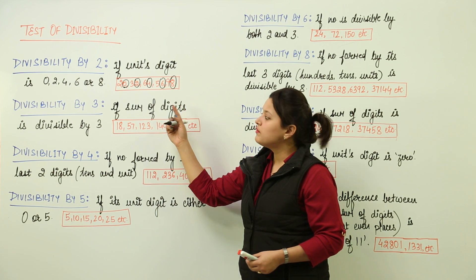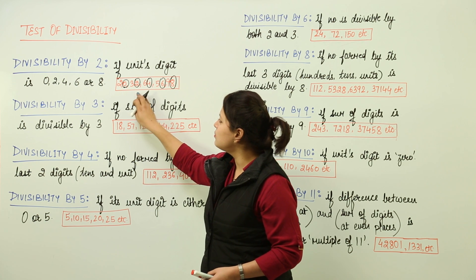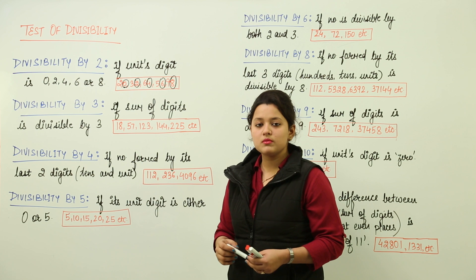You can have such examples where the units place is either 0, 2, 4, 6, or 8. Such numbers are divisible by 2.